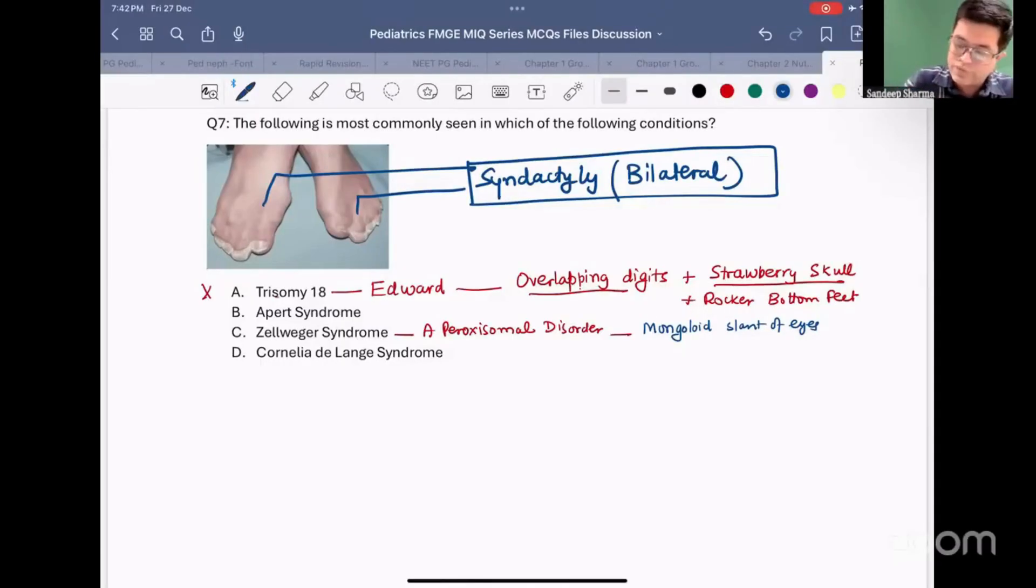Secondly, these patients are found to have abnormalities of bones. They have a thing called as chondrodysplasia punctata. Dysplastic changes happening in the cartilage and the bones and particularly which bone is affected? Patella is the bone which is maximally affected. We call it as stippling of the patella.